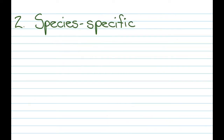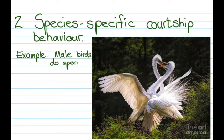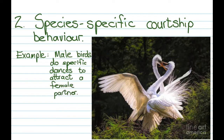Our second one is species-specific courtship behavior. Most of the examples you'll find here have to do with birds. Certain birds have a very specific dance that they do to attract a member of the opposite sex. Swans, for example, will be doing a dance, but that dance will not be recognized by something like a peacock.